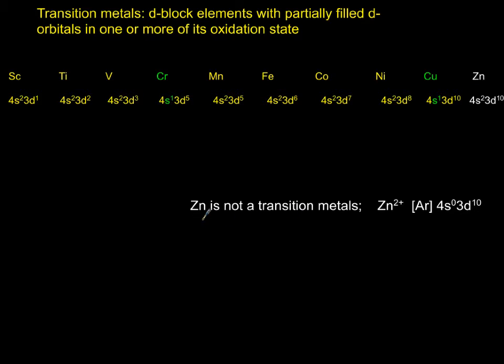It's only a D block element. So if you are a transition metal you definitely are D block, but you could be one D block that is not a transition metal. Why is that? Because zinc only has one oxidation state, 2 plus, and if you remove the electrons first you have to remove it from 4s. You see 3d is completely filled up, so by definition it's not a transition metal.